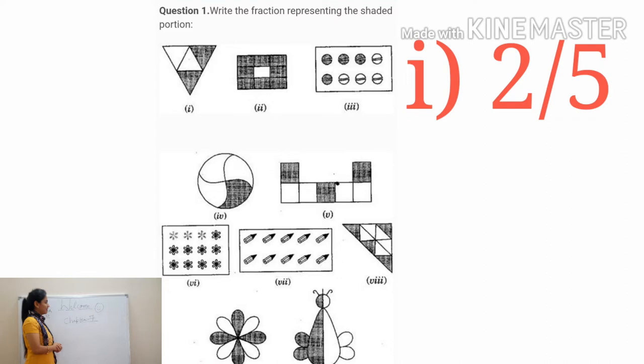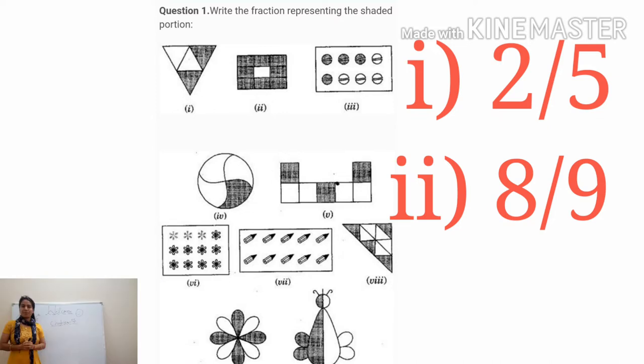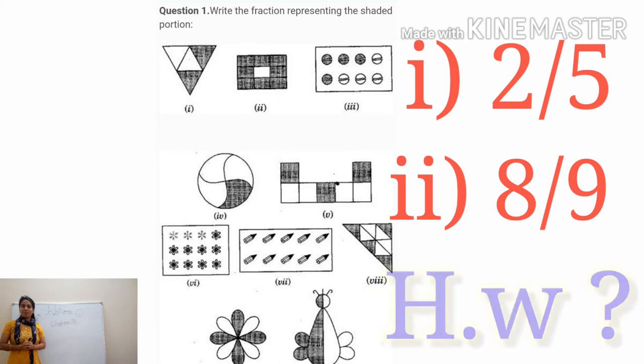Moving forward to the second part: we have a total of 9 parts, and out of 9 parts, 8 parts are shaded. So the fraction would be 8 upon 9. You just need to keep in mind what goes in the denominator — the total — and in the numerator, as per the given question, you write the answer. The rest of the parts you will do as homework in your book. No need to do in your notebooks.